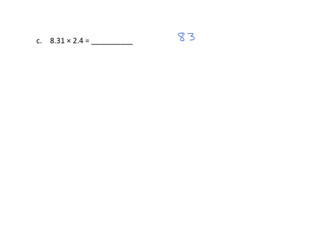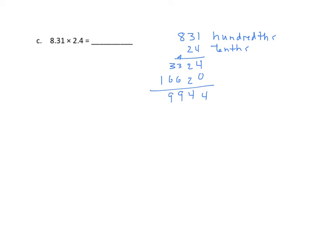Let's start with the unit form. I have 8 and 31 hundredths, which is 831 hundredths, times 24 tenths. We'll start our multiplication. We have 4 times — 12. Regroup the 1. 32 plus 1 is 33. Put in our 0. And we get a 2 and a 6 and a 16. Find the sum of those two, and we get 4 and a 4 and a 9 and a 9 and a 1. We know that we have hundredths and tenths, so that would be thousandths.